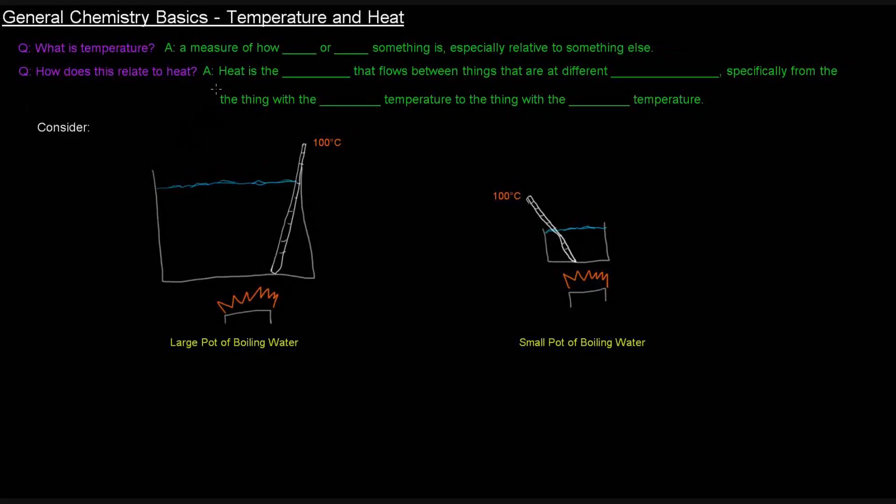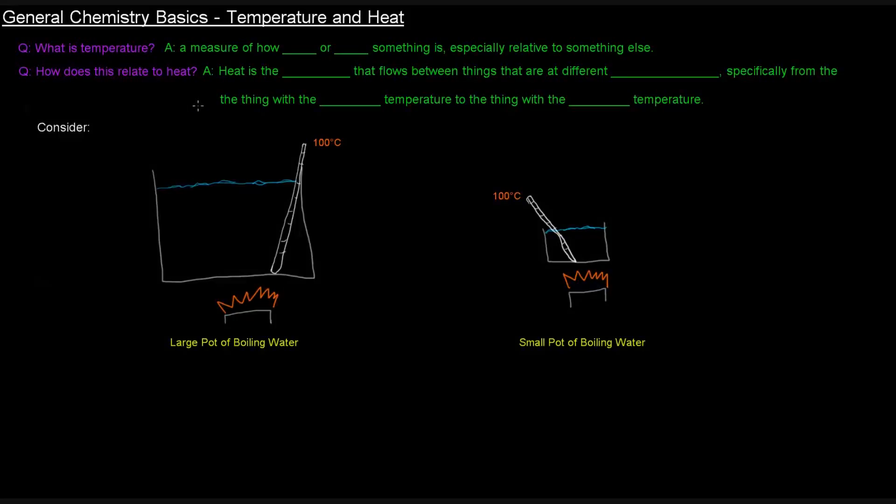In this video we're going to talk about temperature and heat. What is temperature? Temperature is a measure of how hot or cold something is, especially relative to something else. How does that relate to heat? Heat is actually the energy that flows between things that are at different temperatures, specifically from the thing with the higher temperature to the thing with the lower temperature.